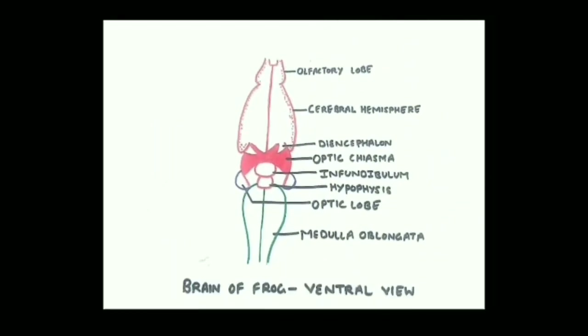In the ventral view, you can find olfactory lobes and cerebral hemispheres. On the ventral side of the diencephalon, the optic chiasma is shown — optic chiasma is formed by the crossing of two optic nerves. The infundibulum is present as a stalk attached to the diencephalon, on which the hypophysis is present. The infundibulum and hypophysis together make up the pituitary body. The optic lobe and medulla are also visible in this view.